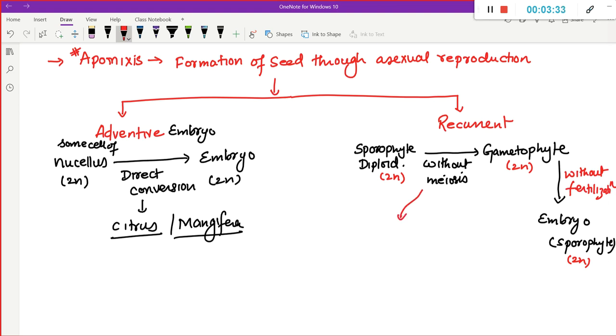So formation of a Gametophyte without meiosis is known as Apospory. What do we call it? We call it Apospory.